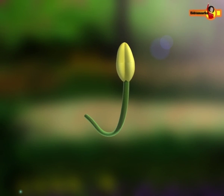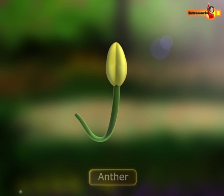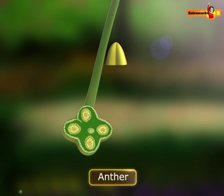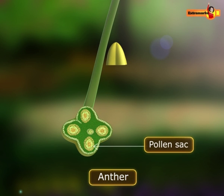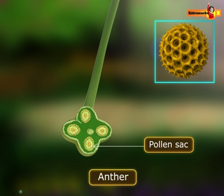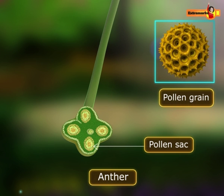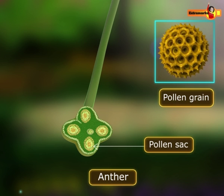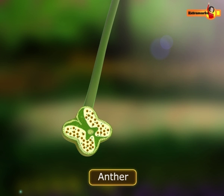The anther consists of four microsporangia, also known as pollen sacs. These pollen sacs are separated by a thin layer of tissue known as connective. Each pollen sac contains numerous pollen grains or microspores. When the mature anther dehisces, pollen grains are released from it.